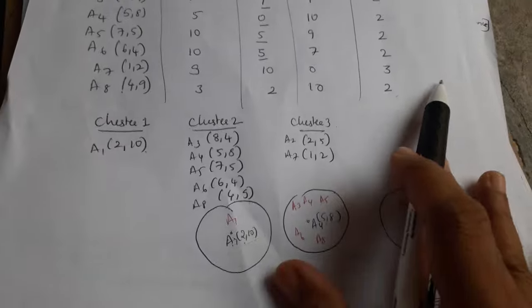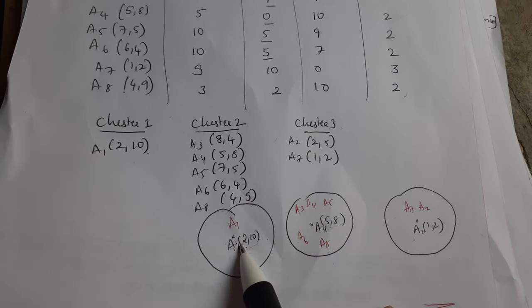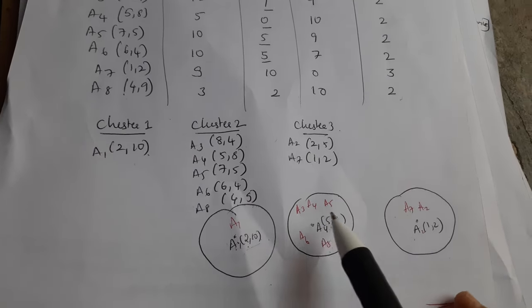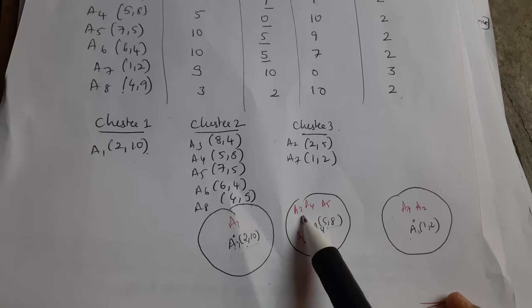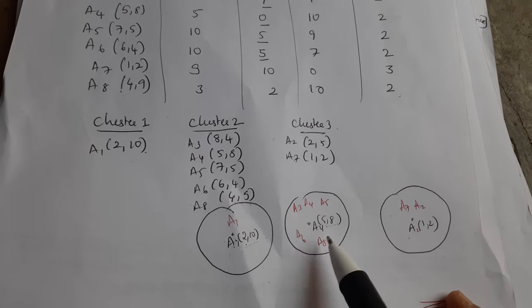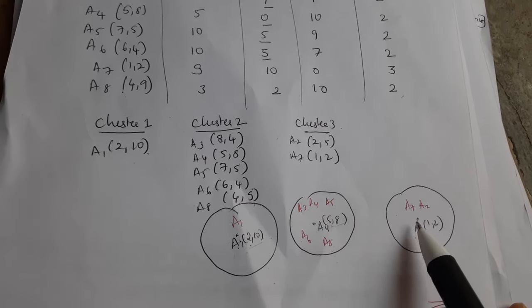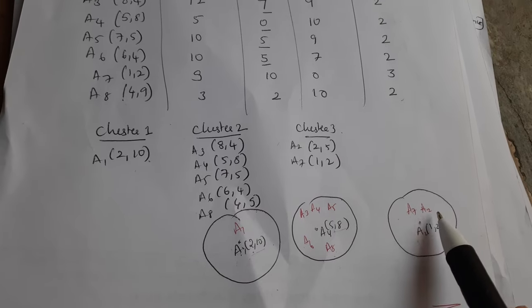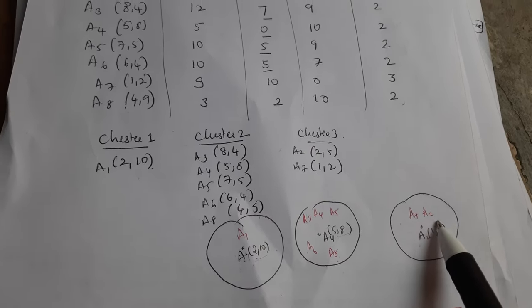Looking at the figure: cluster 1 contains only A1; cluster 2 contains A3, A4, A5, A6, and A8; and cluster 3 contains A2 and A7.